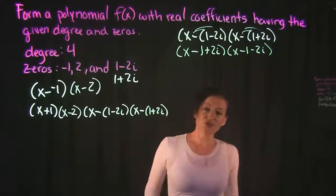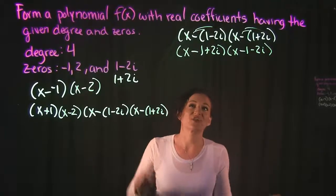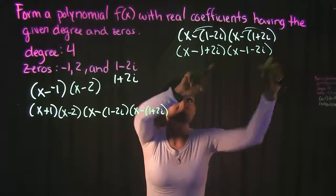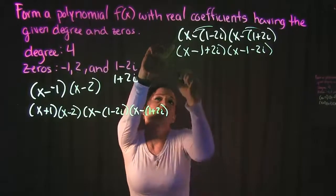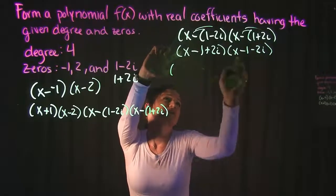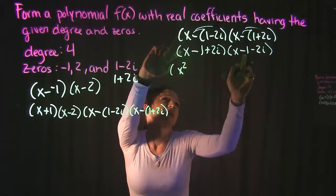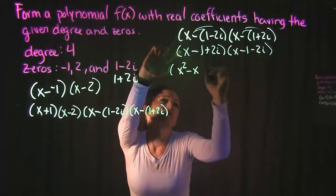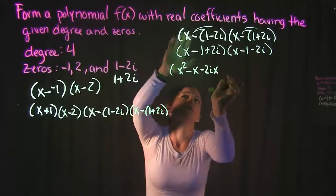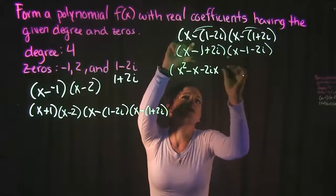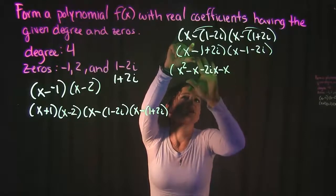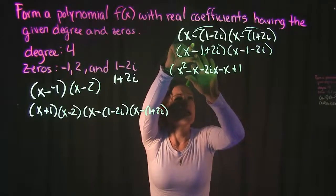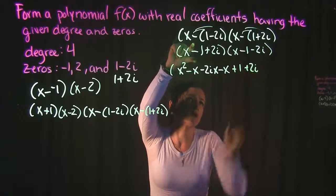The next thing we need to do is we need to multiply this all together. So x times everything, negative 1 times everything, 2i times everything. So we have x times x which is x squared. x times negative 1 which is negative x. x times negative 2i gives us a negative 2ix. Multiply everything by negative 1. Negative 1 times x is a negative x. Negative 1 times negative 1 is a positive 1, and negative 1 times negative 2i is a positive 2i.